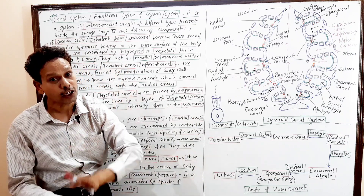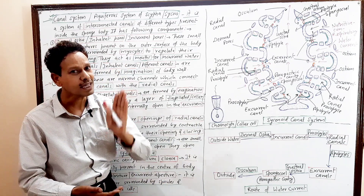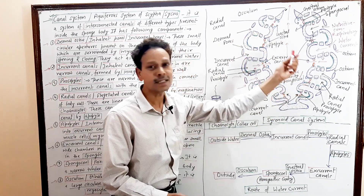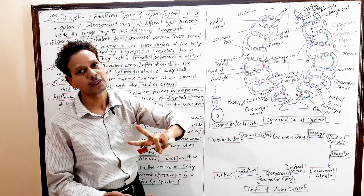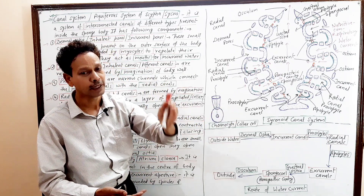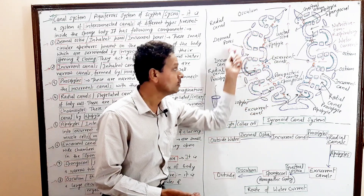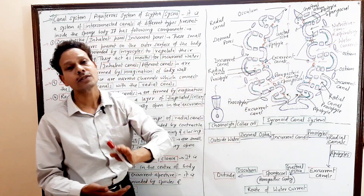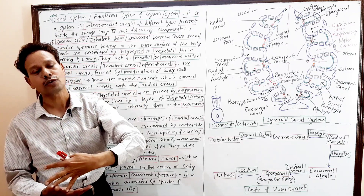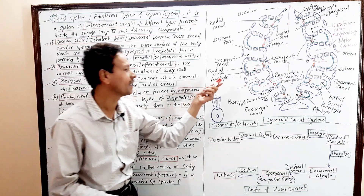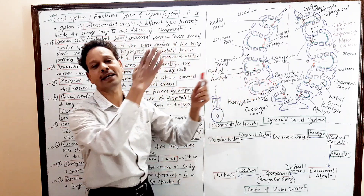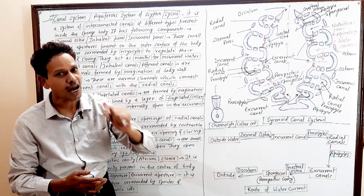This entire canal system is syconoid, and this canal system develops due to foldings — both infoldings and outfoldings — of the body wall. In the case of Incurrent Canals, these are formed by infoldings, that is, by invagination.